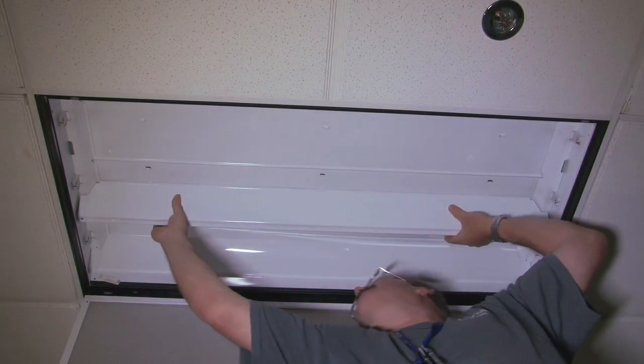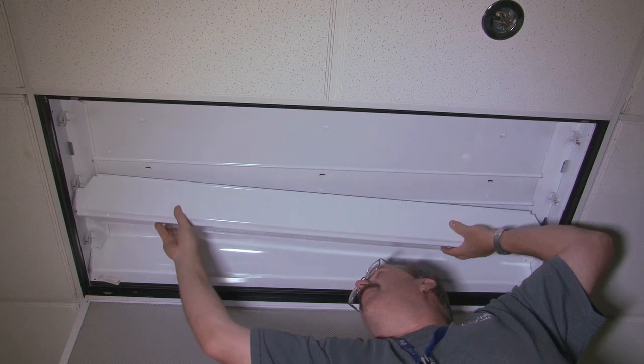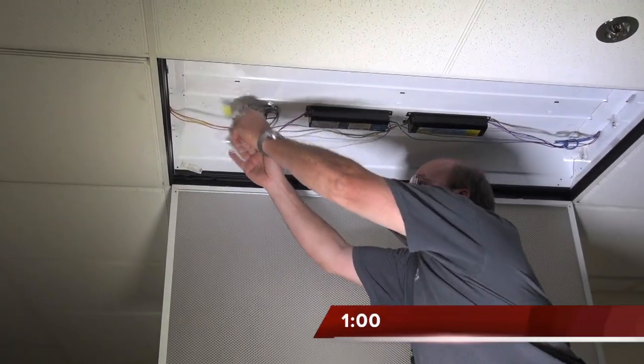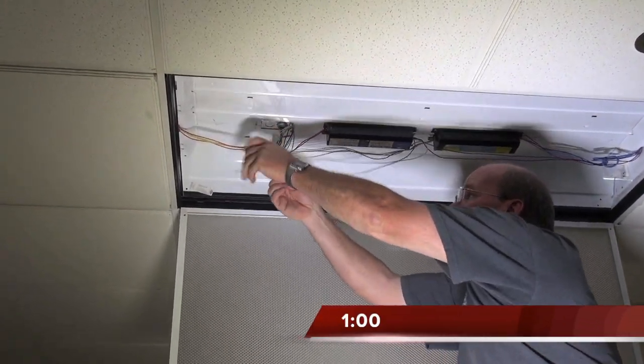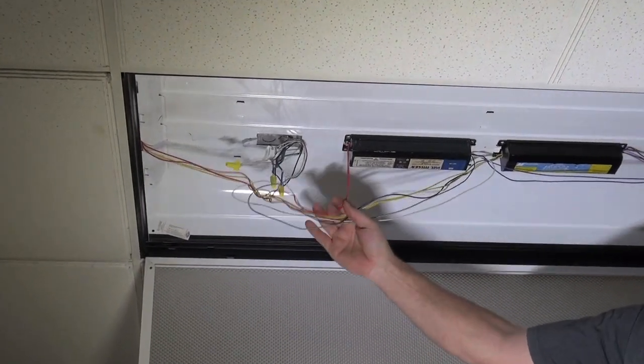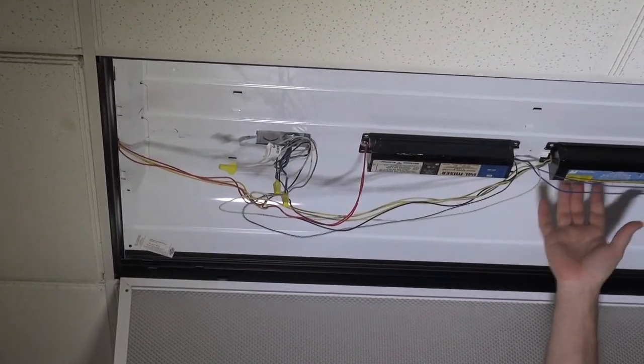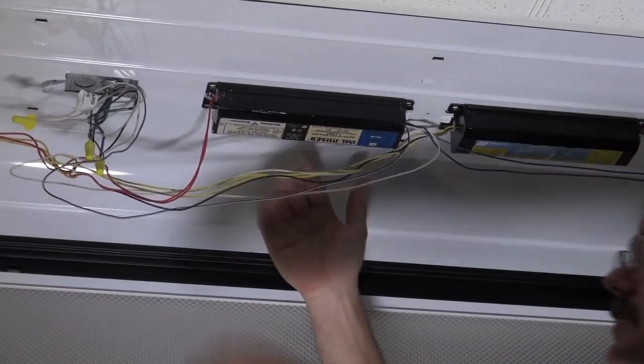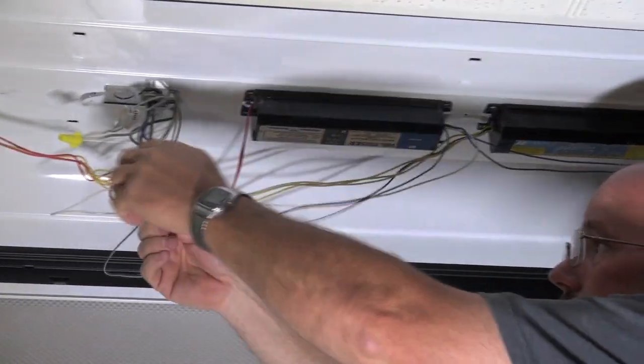We need to remove the ballast cover. Since this is a three lamp system, there's two ballasts in here right now - a single ballast and a double ballast for the lamps, so you've got two hot legs.